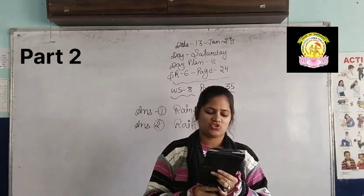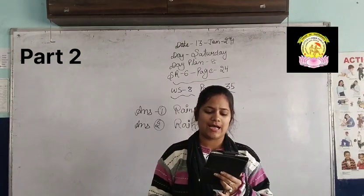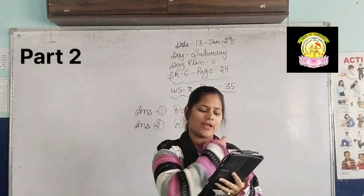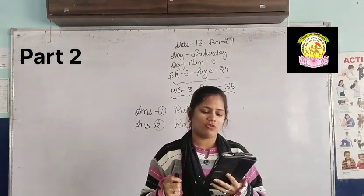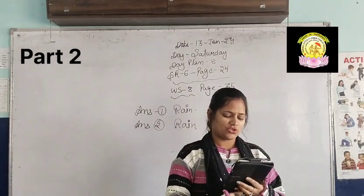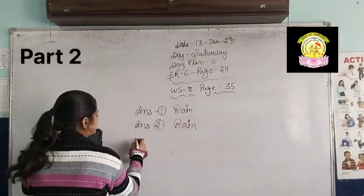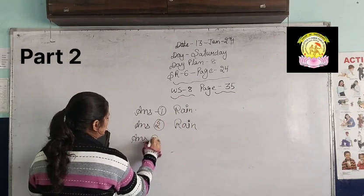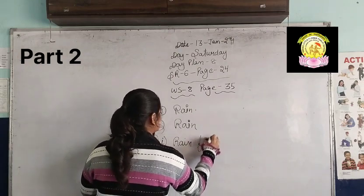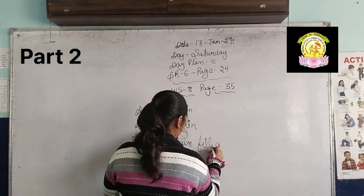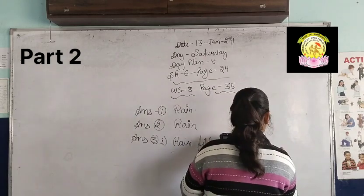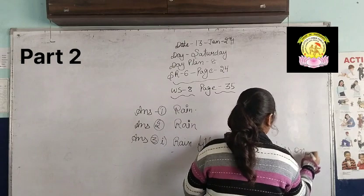Third question: look at the picture and explain how water bodies are filled and how water underground gets full. Third question, first part answer: rain fills all water bodies on earth.